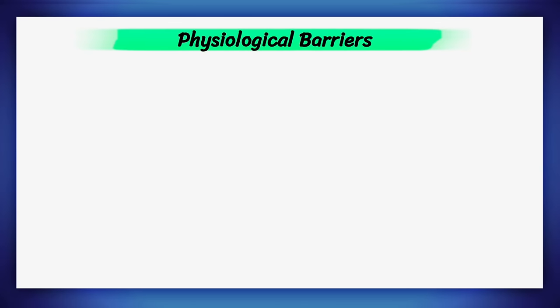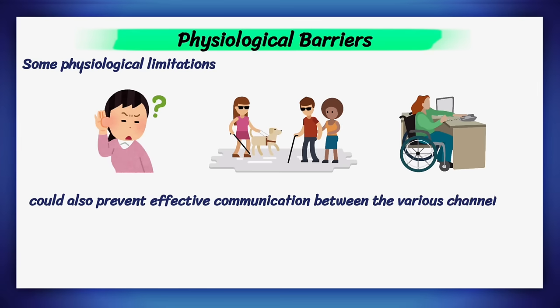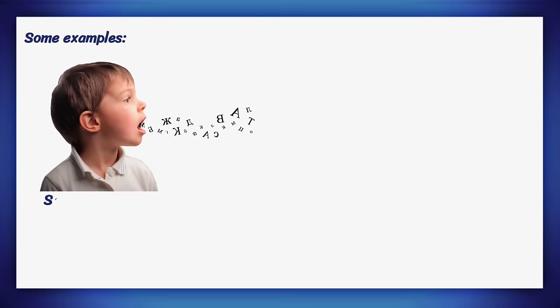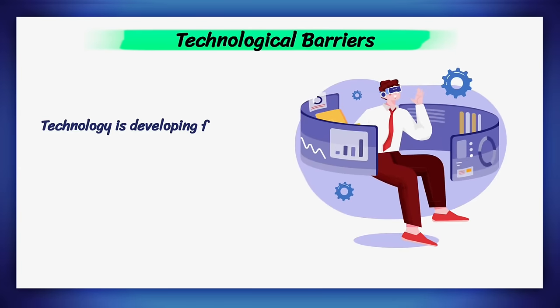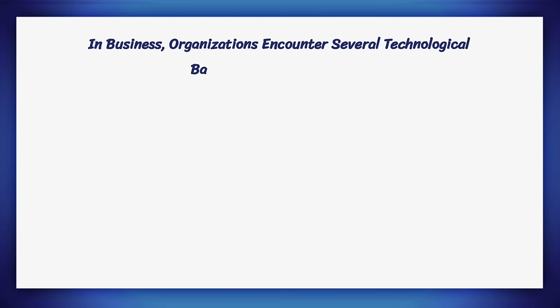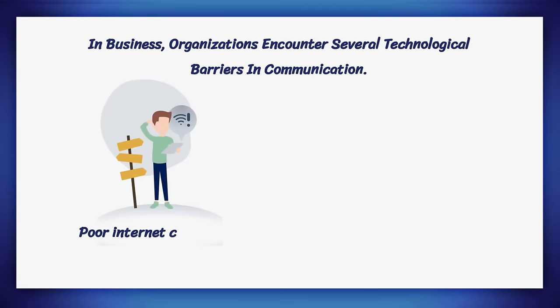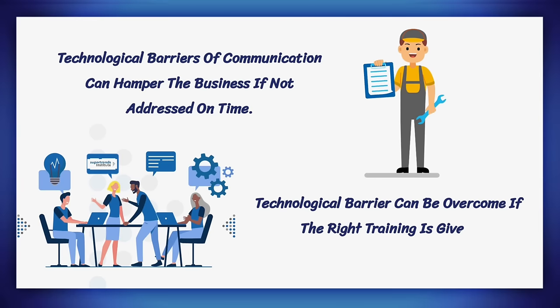Physiological barriers: some physiological limitations like certain disorders or diseases can also prevent effective communication. Examples of physiological barriers include shrillness of voice, dyslexia, etc. These are not crucial and can be easily removed. Technological barriers: technology is developing fast, and as a result, it is difficult to adapt to new technologies. Organizations encounter several technological barriers in communication, some obvious like poor internet or obsolete hardware. Technological barriers can hamper the business if not addressed on time, but can be overcome if the right training is given.